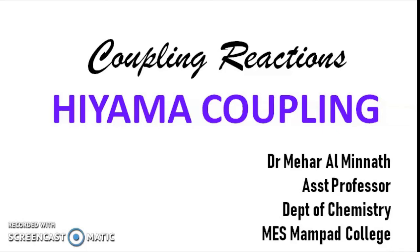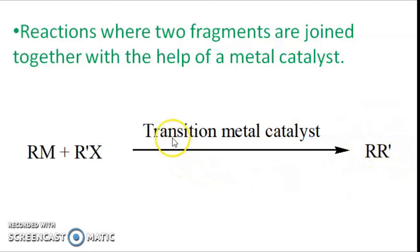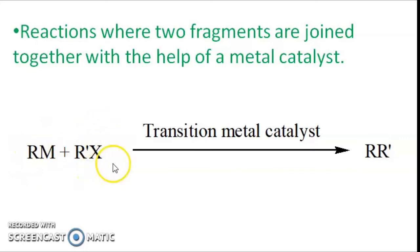Before going into detail on what Hiyama coupling is, let us quickly go through what a coupling reaction is. A coupling reaction involves bringing together two organic fragments in the presence of a transition metal catalyst to get another organic compound. The substrates which are brought together are an organometallic compound and an organohalide.